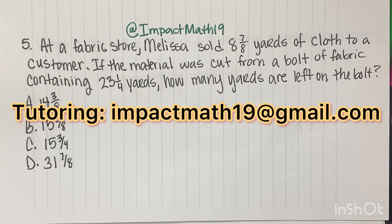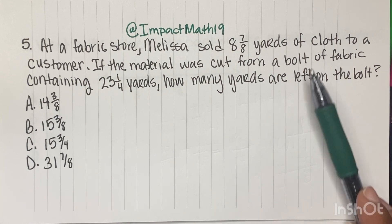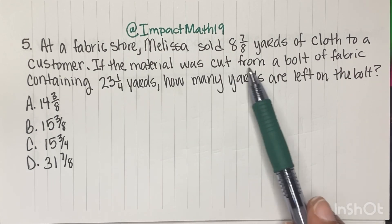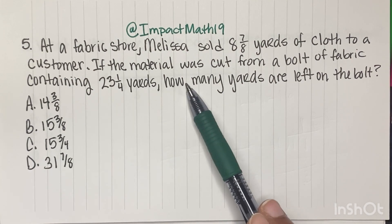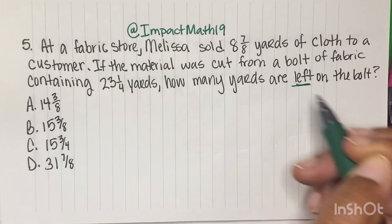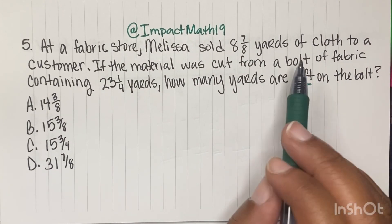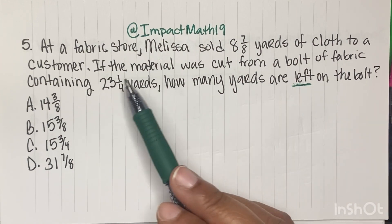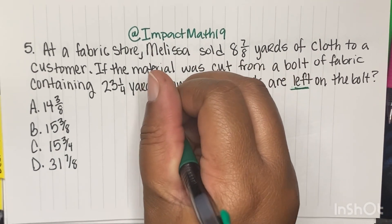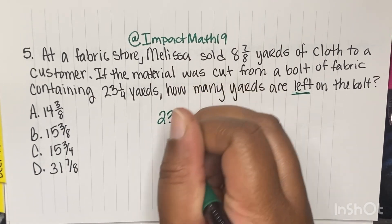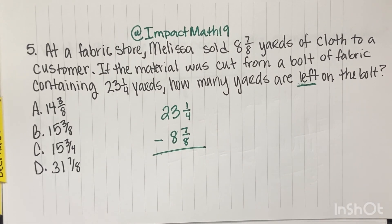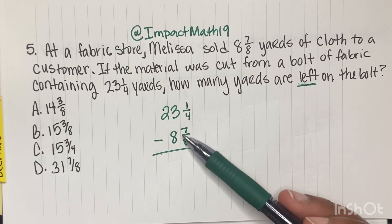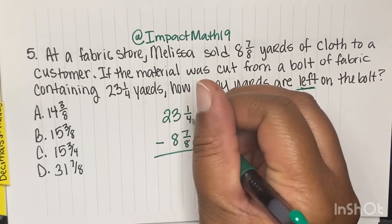At a fabric store, Melissa sold 8 and 7 eighths yards of cloth to a customer. If the material was cut from a bolt of fabric containing 23 and 1 fourth yards, how many yards are left on the bolt? If we're trying to figure out how many are left, we're going to subtract: 23 and 1 fourth minus 8 and 7 eighths. Remember, whenever you're subtracting, you need to have the same denominator. So we need to change this 4 into an 8.